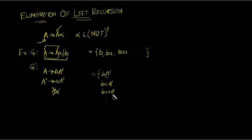There is no end to this A prime, so we have to end this A prime by introducing epsilon production. Now we can substitute the epsilon here to get B.